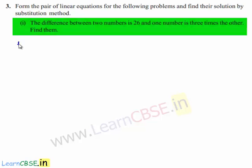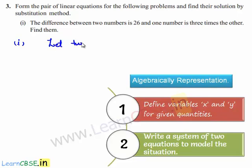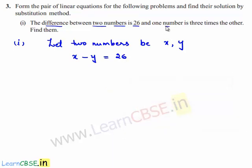Let us work out this problem. Let the two unknown numbers be x and y. So according to the given problem, the difference between the two numbers is 26, that means x minus y is 26. Also, one number is three times the other, so x is equal to three times y. Let this be equation number one and this be equation number two.